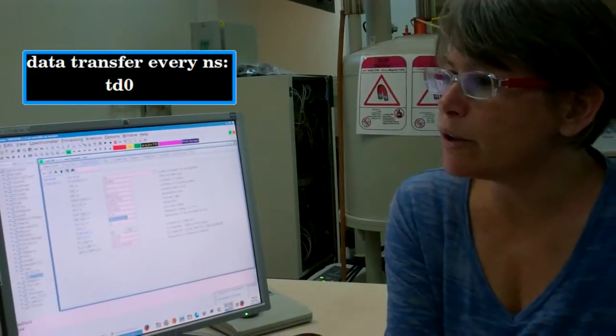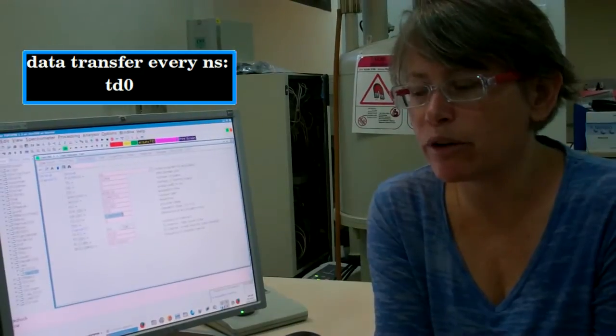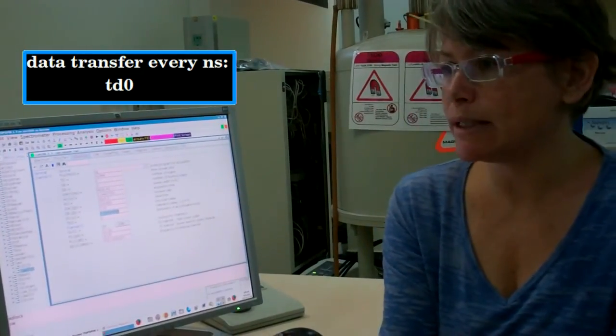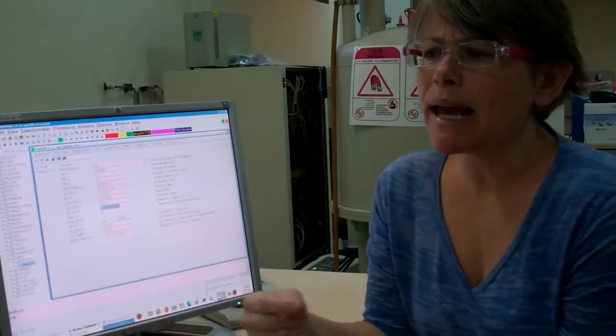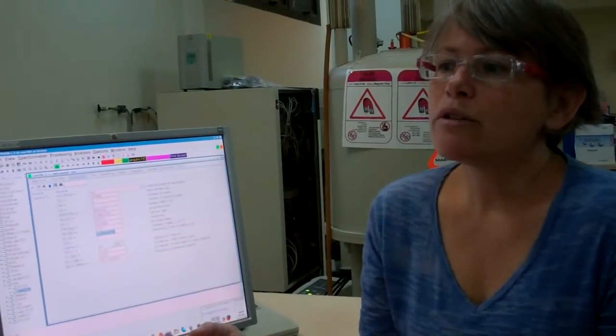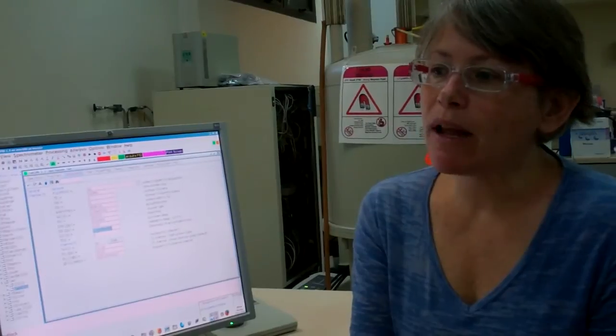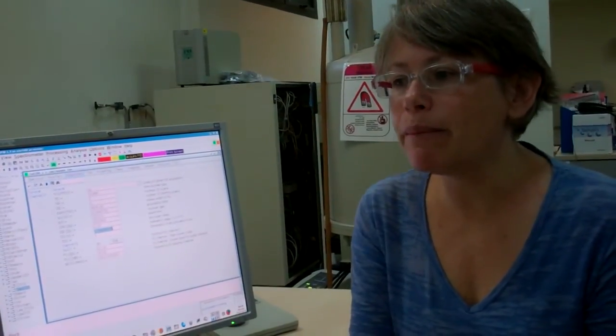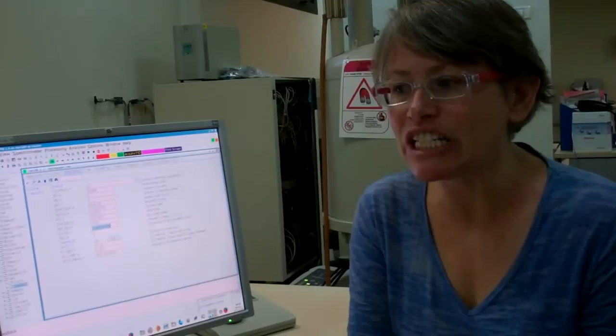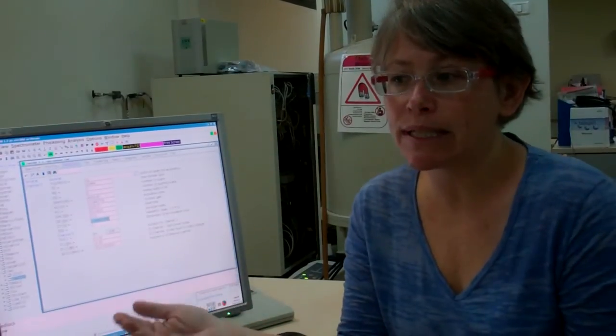TD0 is another loop that contains the NS loop inside it. Every NS, the acquired data will be transferred from the CCU in the cabinet to this computer where I'm sitting. If something happens to the computer connections before the data is transferred, it'll be lost. So if I'm running a very long experiment, I might want to transfer the data every so often, and I can do this using TD0. Another strategy is to collect blocks of data in different experiment numbers using a command called multi-ZG. If you use multi-ZG, then at the end you'll need to add all the different experiments together.